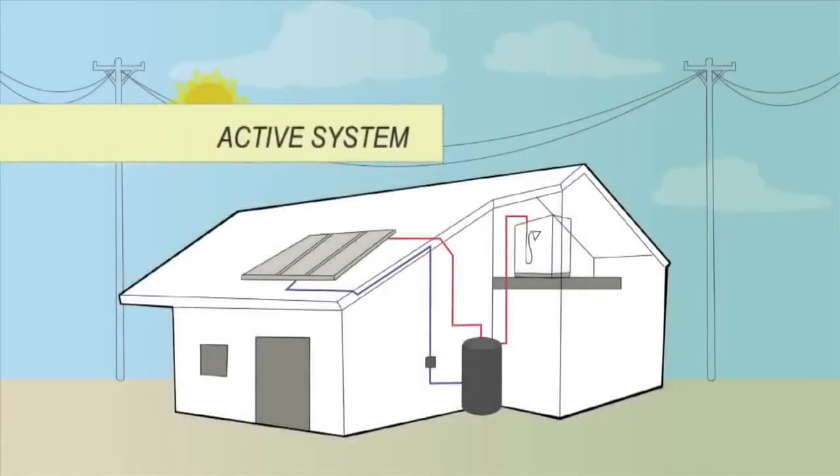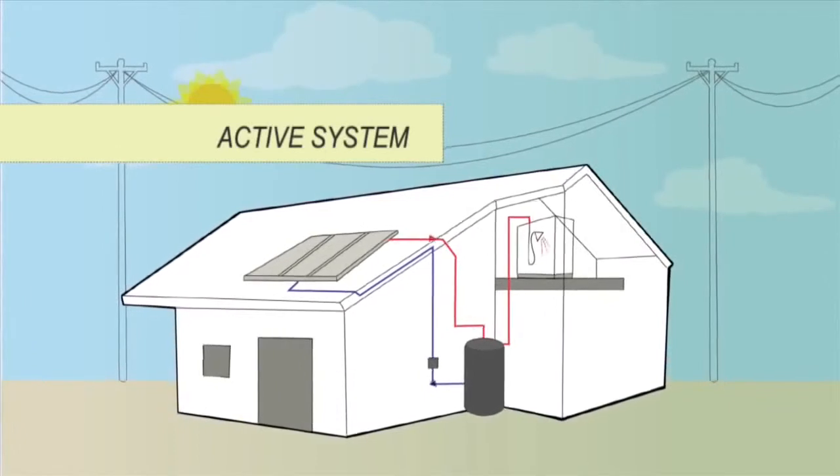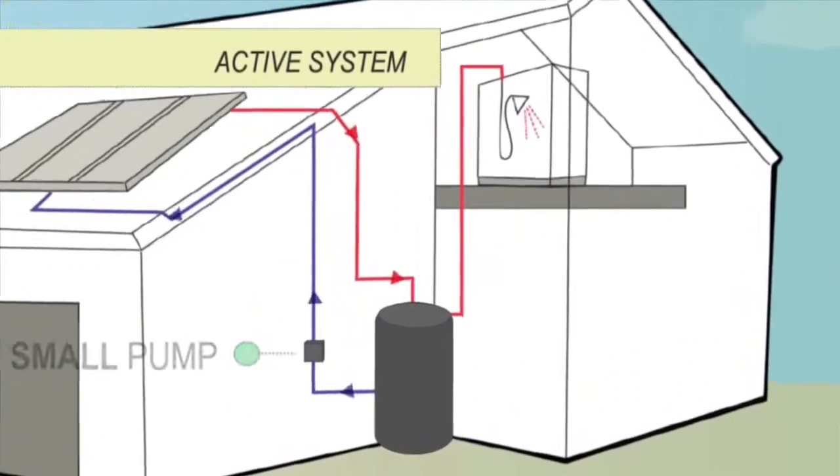Active systems use a small pump to move water between the collectors and the tank. The location of the tank can be within the roof or on the ground.